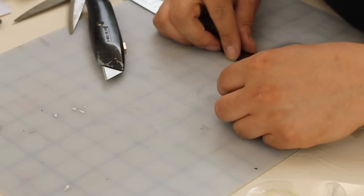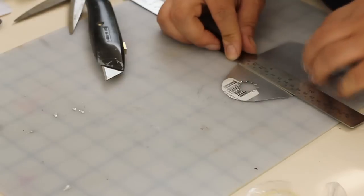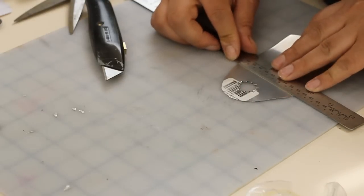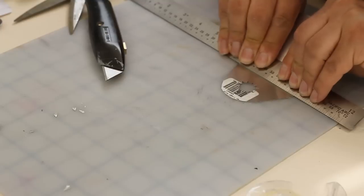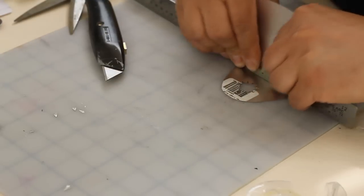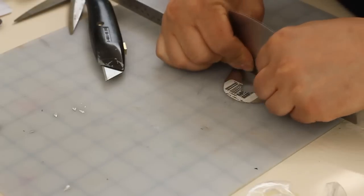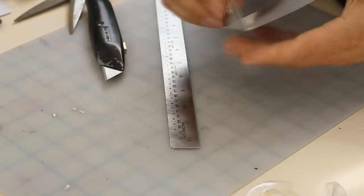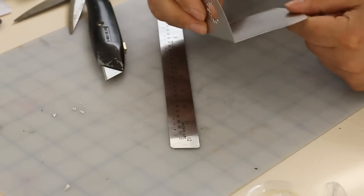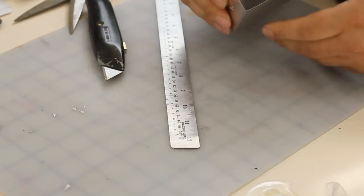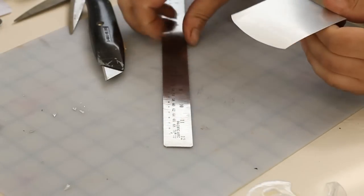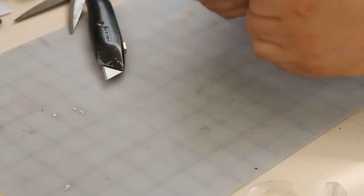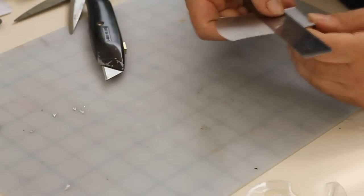You could do this with a piece of wood or any other kind of ruler. Grip both pieces together and just bend it back. So that's about a 90 degree bend right there.